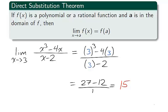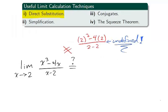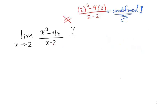But what if we were to look for the limit as x approaches 2? This is where simplification comes into play. We cannot calculate this limit using the direct substitution theorem, as the function is undefined at x equals 2. So how can we calculate this limit? First, notice that this function is not simplified.